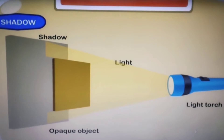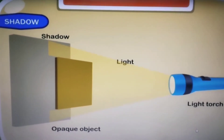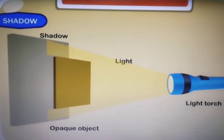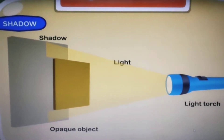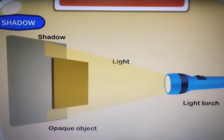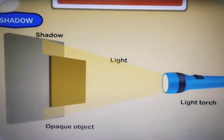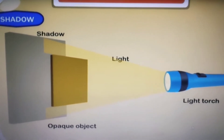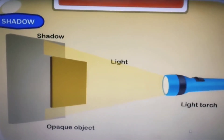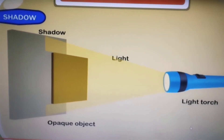Dear students, a few days before I gave you an activity based on shadows. Today we are going to discuss about shadows — how shadows are formed. For a shadow to be formed, we require a source of light, an object which blocks the path of the light, and a surface to form the shadow.